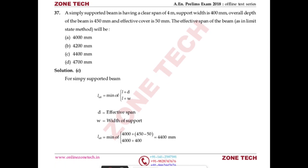Question number 37: a simply supported beam has a clear span of 4 m, support width 400 mm, overall depth 450 mm, and effective cover 50 mm. Find the effective span. As per IS 456-2000, effective span = minimum of (L + D) and (L + W) = minimum of (4000 + 450) and (4000 + 400) = 4400 mm. Answer: C.